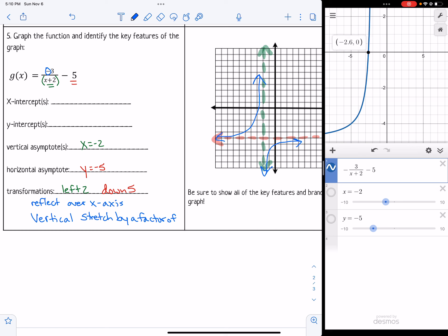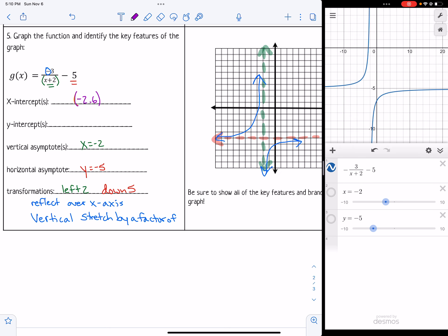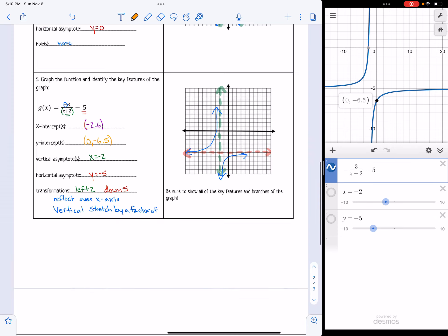So the x-intercept is negative 2.6. Let me try that. Negative 2.6. And then the y-intercept was 0, negative 6.5.